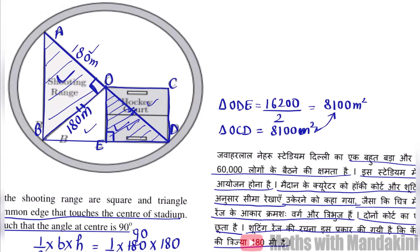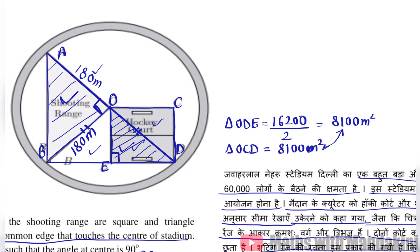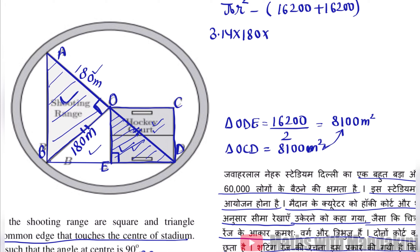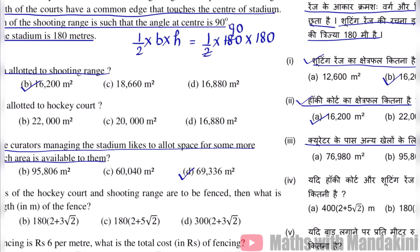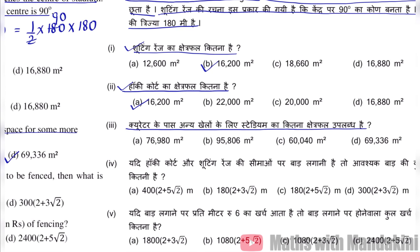Toh ab hum dekhein humara stadium kis aakar ka hai. Stadium hai humara circular shape ka, yani vritakar. Toh vrit ke shetrifal mein se, hum yeh donoh — shooting range ka shetrifal aur hockey court ka shetrifal — in donoh ko ghaata kar dete hain. Toh hume pata hai vrit ka shetrifal hota hai pi r square. Is mein se hume minus karna hai 16,200 plus 16,200. Pi yani 3.14, r = 180, guna 180, minus 32,400. Jab hum isse solve karenge, toh humare paas answer aa jayega 69,336 m². Humara correct answer option D hai.